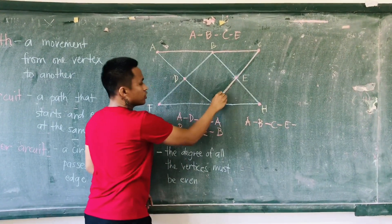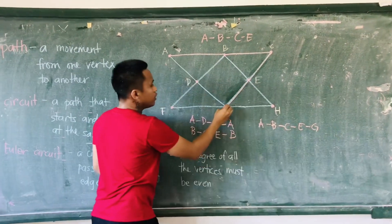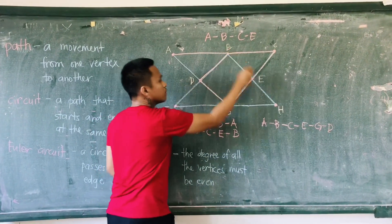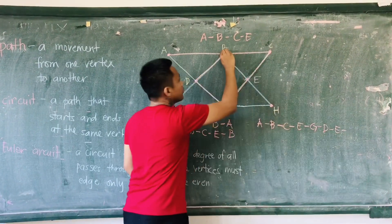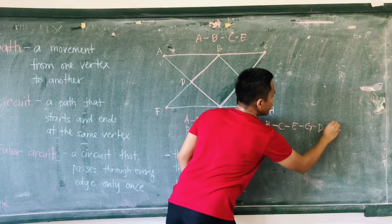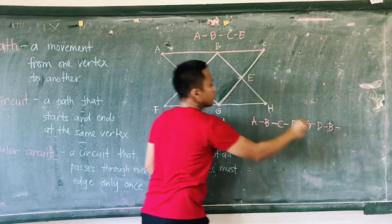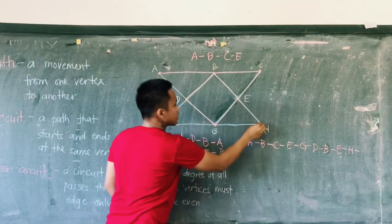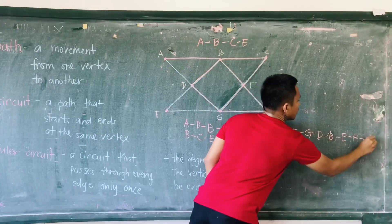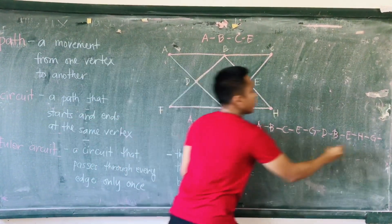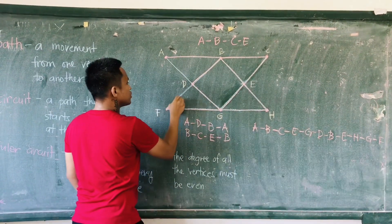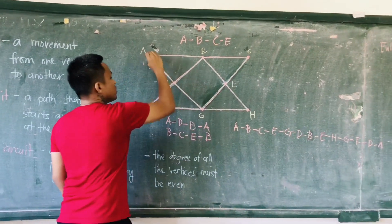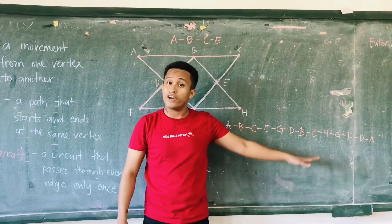Continuing the Euler circuit example, we traverse through the remaining vertices — including D, H, G, F — and lastly going back to the starting vertex. So this is an example of an Euler circuit, which passes through every edge only once and starts and ends at the same vertex.